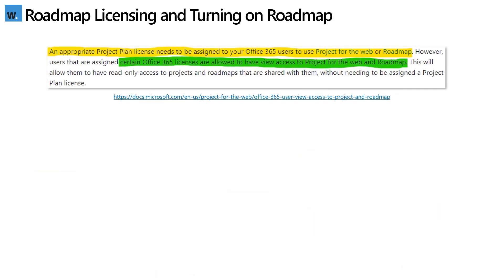From a licensing perspective, we have a few options. For those wanting read-write access, users have to have Project Plan 3 or Project Plan 5 in place. Whilst those that only require view access to the roadmap, they simply need one of the qualifying Office 365 plans in place — for example, E5, E3, E1, or one of the multitude of other supported plans.